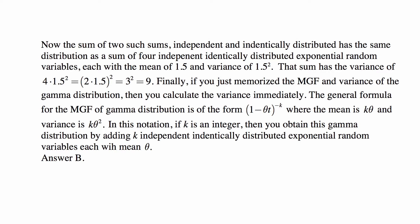But also, if you just memorize the MGF and variance of the gamma distribution, then you calculate the variance immediately. The general formula for the MGF of gamma distribution is of the form (1-theta*t)^(-k), where the mean is k*theta and variance is k*theta^2. In this notation, if k is an integer, then you obtain this gamma distribution by adding k independent identically distributed exponential random variables, each with mean theta.